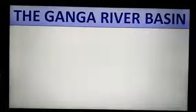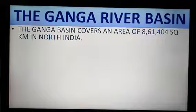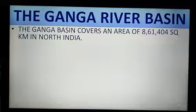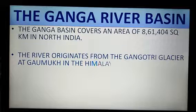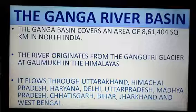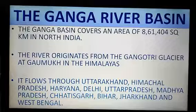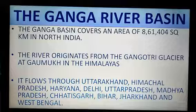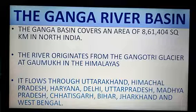The Ganga River Basin covers an area of 8,61,404 km² in the north. The river originates from the Gangotri Glacier at Gaumukh in the Himalayas. It flows through Uttarakhand, Himachal Pradesh, Haryana, Delhi, Uttar Pradesh, Madhya Pradesh, Chhattisgarh, Bihar, Jharkhand and West Bengal. The Ganga Basin is the most populated part of India and is home to more than 500 million people, making it the most populated river basin in the world.